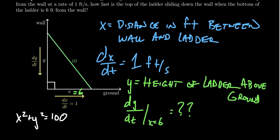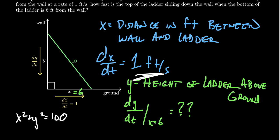Derivatives are rates of change. If I were to plug in X equals six prematurely, I'd be saying the distance between the wall and the ladder is always six feet — meaning no variability, no change. But that would defy the reality that the distance between the wall and the ladder is increasing by a foot per second.